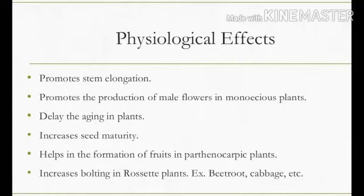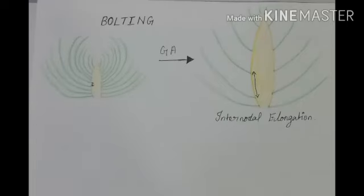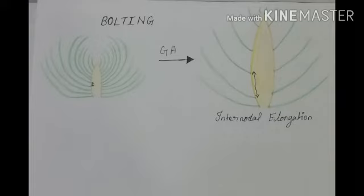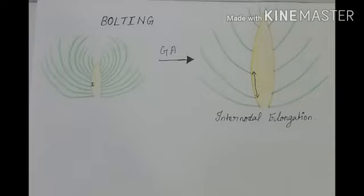Rosette plants are plants where the internodes are present very close together. Examples of rosette plants are beetroot and cabbage, where the leaves are present very closely. When cabbage is treated with gibberellic acid, the internodes become much elongated — this internodal elongation is called bolting. Because the distance between the internodes gets much elongated, the cabbage size also becomes very big. These are all the physiological effects of gibberellic acid.